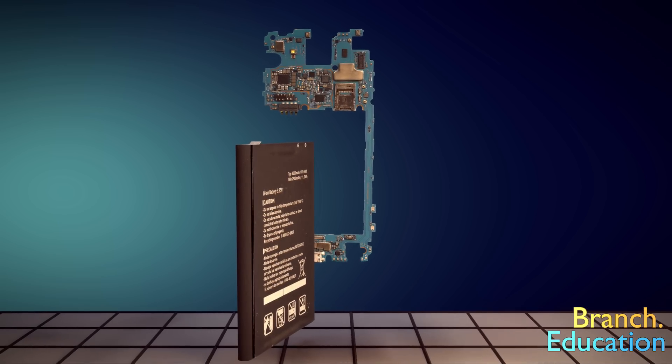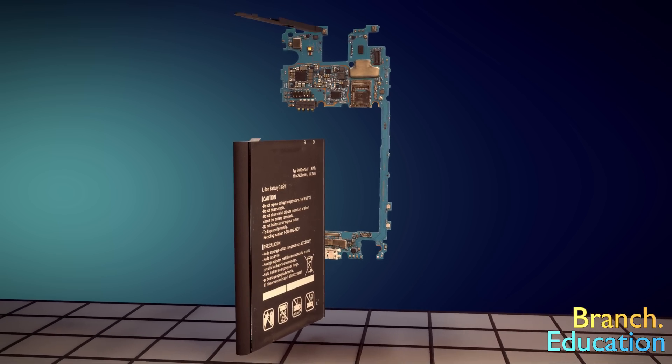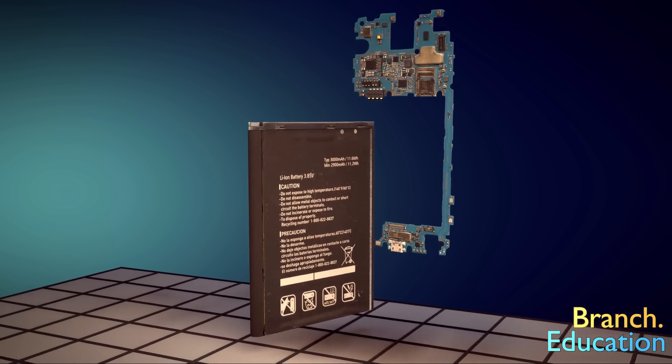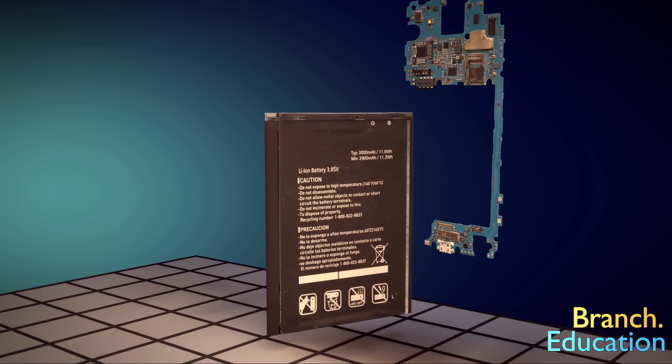In order to regulate the flow of electricity, additional circuitry is added to the top of the battery. This circuitry prevents overcharging and damage to the battery.